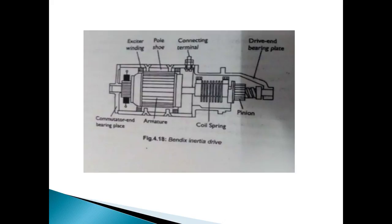This is the screw-type mechanism. It includes a coil spring, a screw, and a sleeve. The Bendix thread is provided on the shaft. There are screw threads on the drive pinion, and it is mounted on the sleeve. The pinion can move forward and backward along these threads.